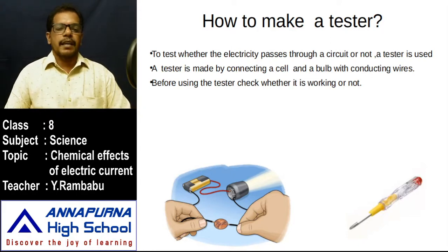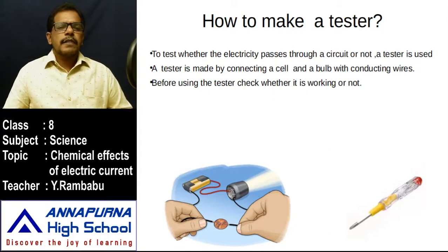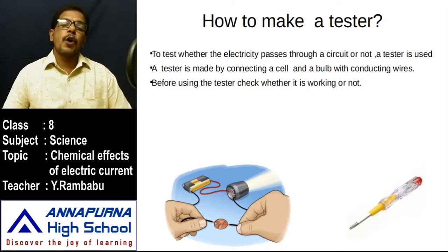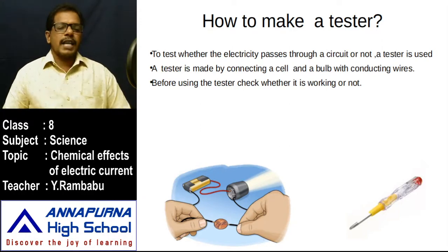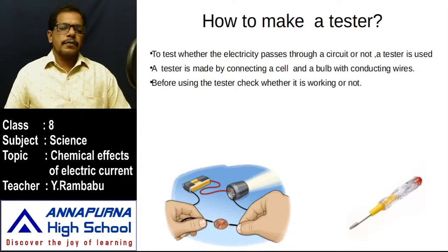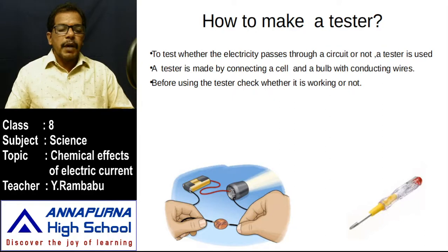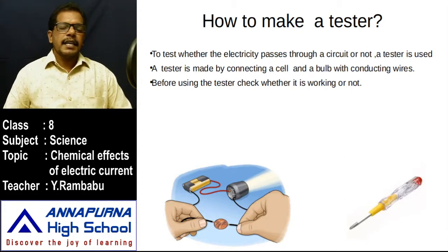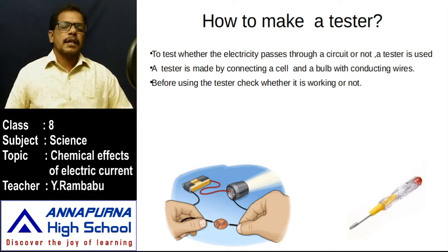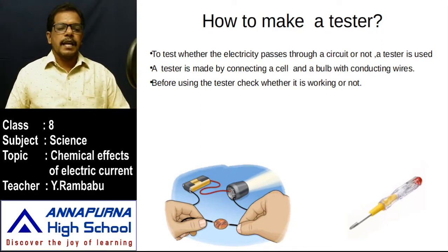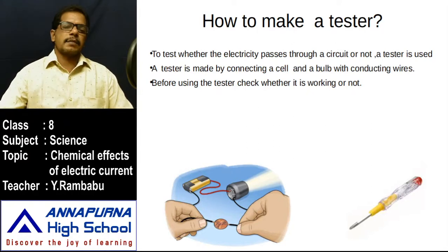Before testing, check whether the tester is working — just connect the two free ends together. If the bulb glows, the tester is working and ready to test. If the bulb doesn't glow, there may be loose connections, a fused bulb, or an exhausted battery. Check for loose connections and fix them; if the bulb is fused, replace it; if the battery is used up, replace it with a new one. Connect the free ends again — if the bulb glows, the tester is ready.